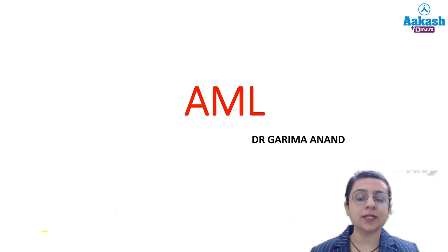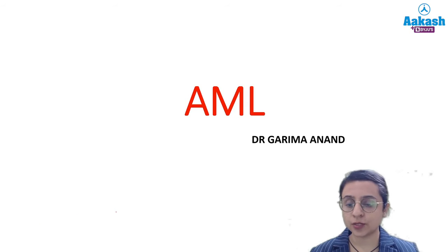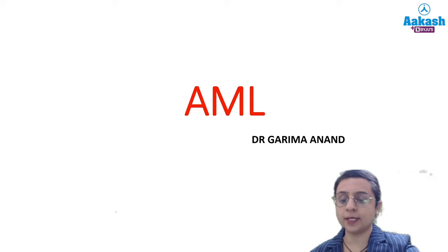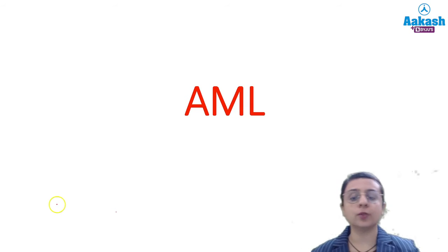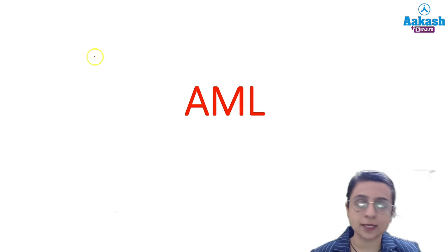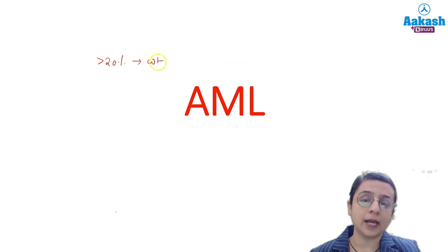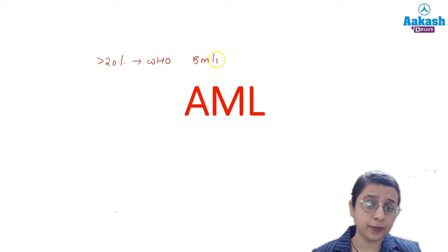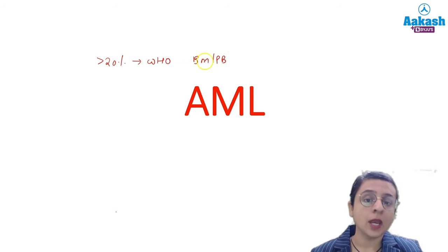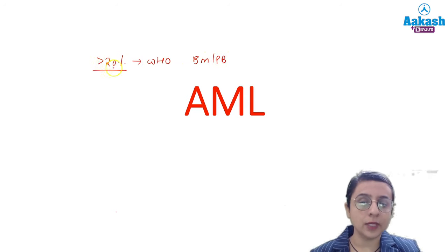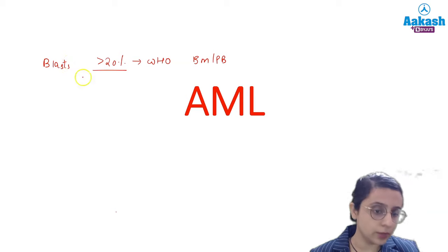Hi students, continuing the series of Dumb Laga Ke Haisha, today we will start with Acute Leukemia. What do you mean by Acute Leukemia? When the blast count is more than 20% according to WHO, if the blast count is in the bone marrow or in the peripheral blood is more than 20%, that is the case of Acute Leukemia.